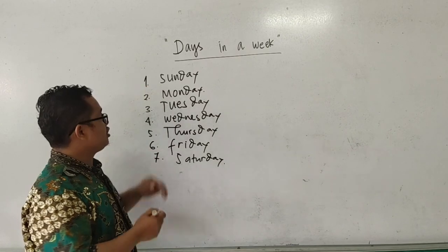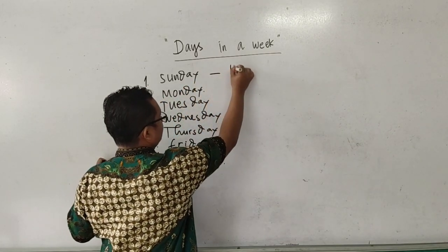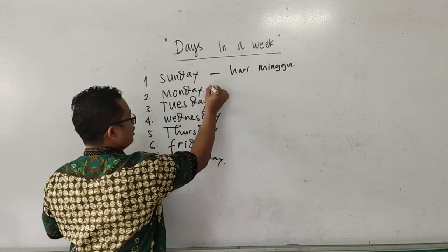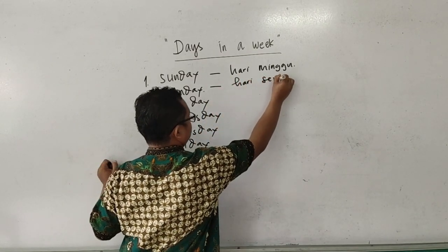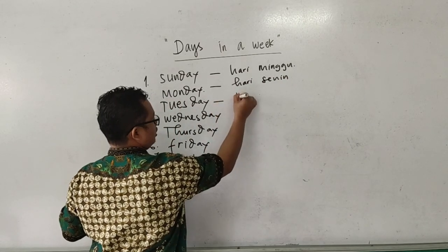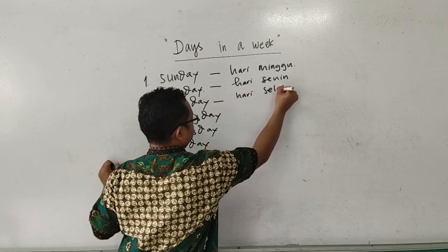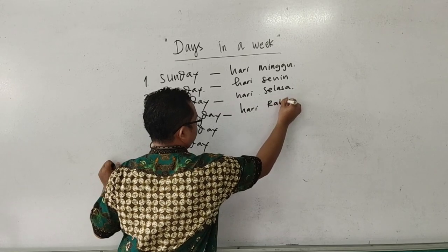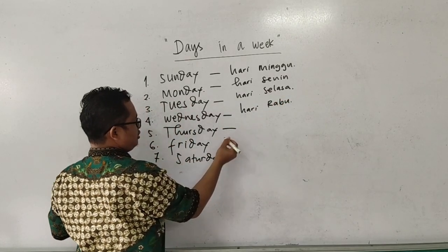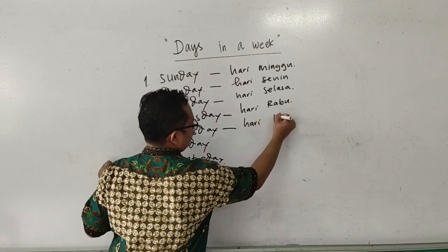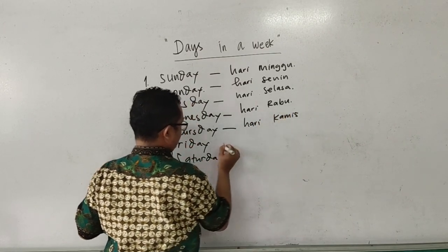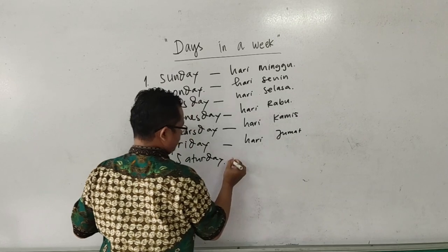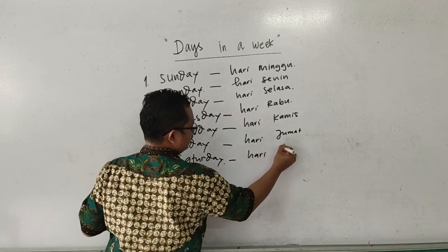Now let's continue. The names in Indonesian. Okay. Sunday itu adalah hari Minggu. Monday adalah hari Senin. Tuesday adalah hari Selasa. Wednesday adalah hari Rabu. Thursday adalah hari Kamis. Friday, hari Jumat.